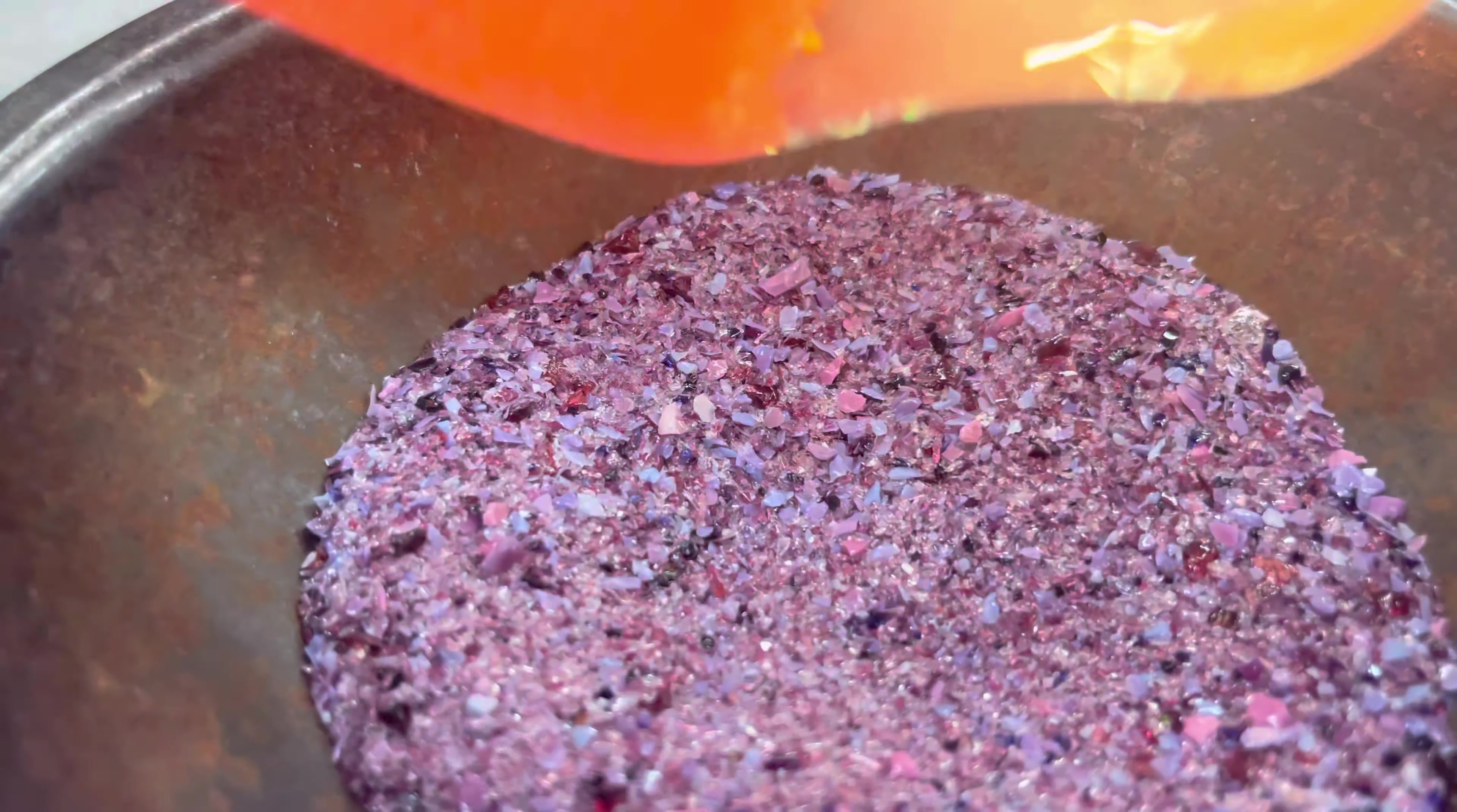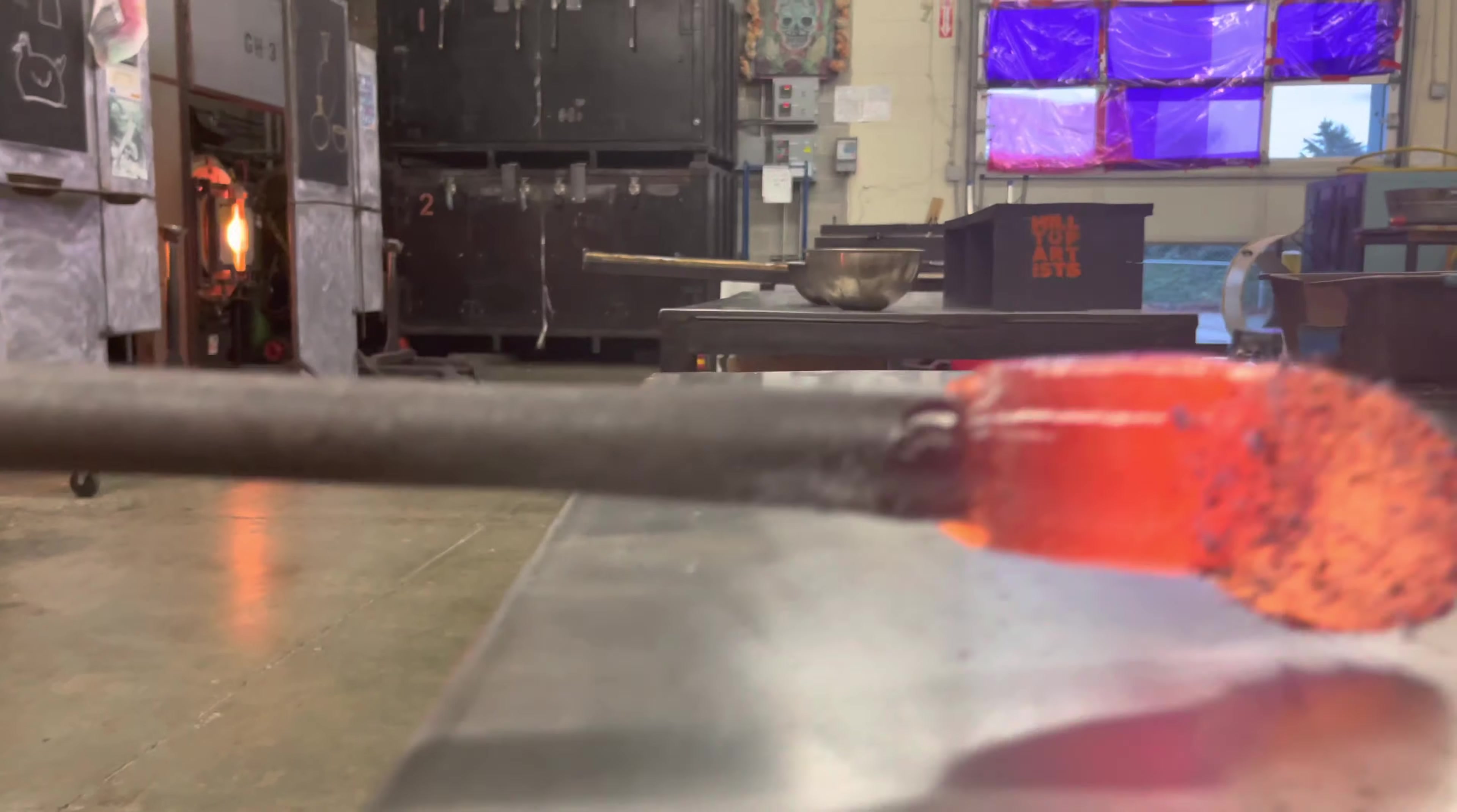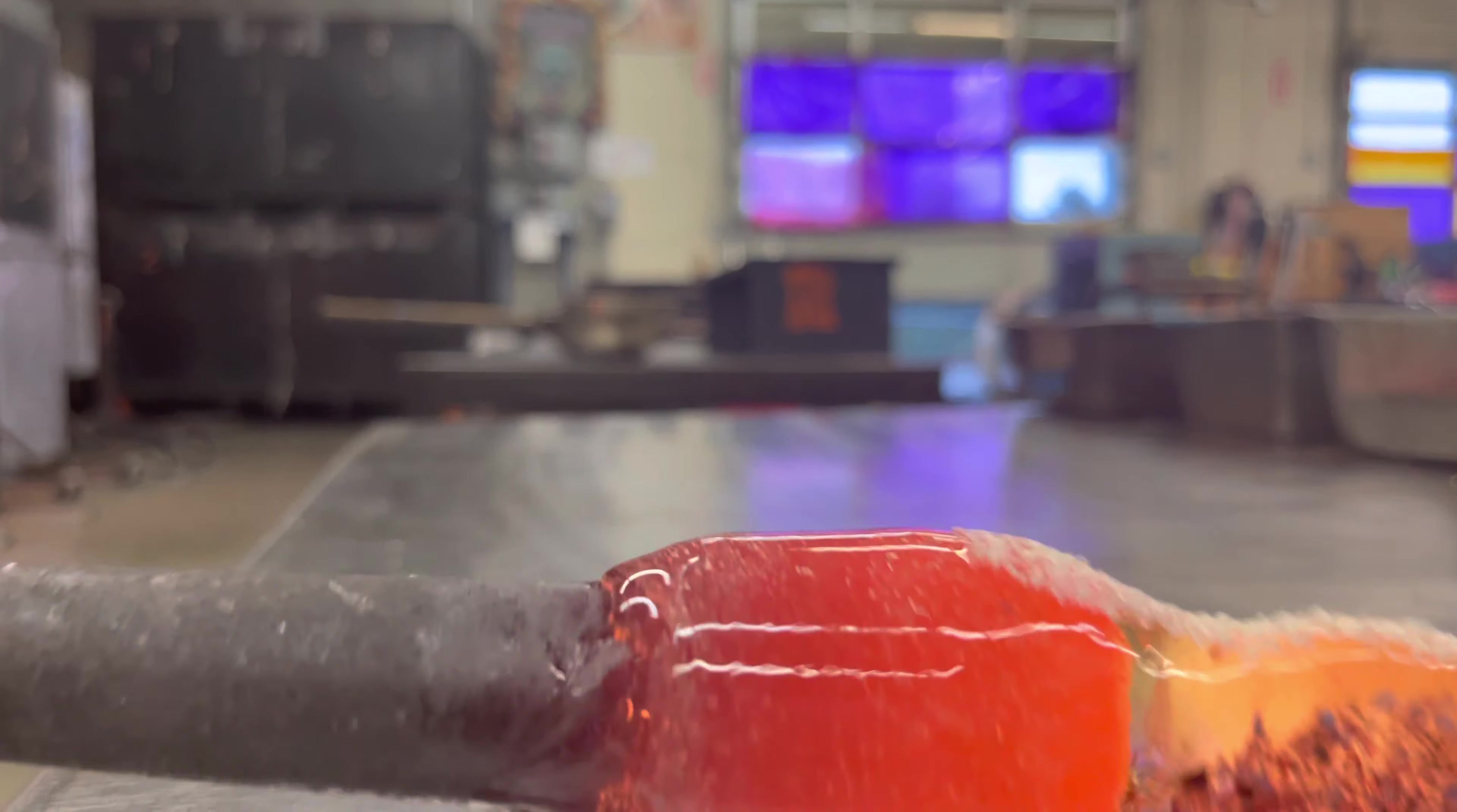We begin with applying color to our glass. We're using crushed up color called frit. Now we want to produce a twisted effect, so we're only going to apply color on the opposite sides.